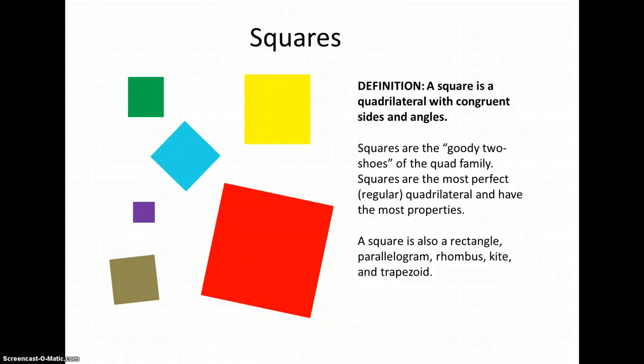Squares are the goody two-shoes of the quadrilateral family. They're the most perfect. They follow the most rules. They have the most properties. And this is the regular quadrilateral.